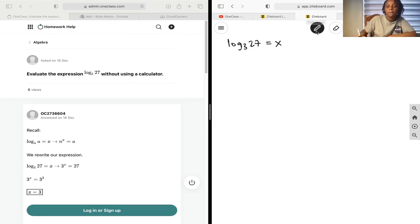So trying to find x, and we need to remember how to write this in exponential form. When we have log base a of b equals x, in exponential form that is a to the x equals b.